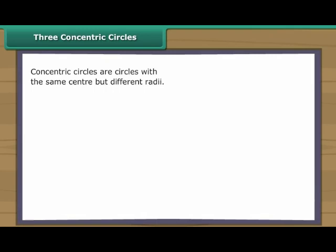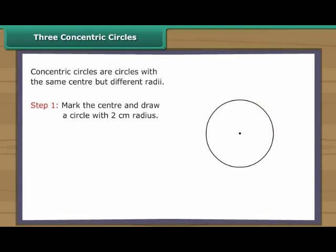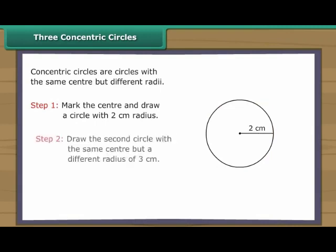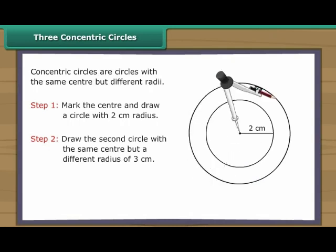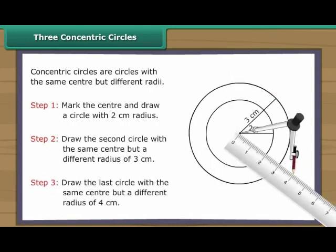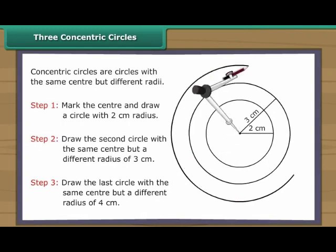Three concentric circles. Concentric circles are circles with the same centre but different radii. Let us now draw three concentric circles with the radii two, three and four centimetres. Mark the centre and draw a circle with two centimetres radius. Draw the second circle with the same centre but a radius of three centimetres. Draw the last circle with the same centre but a radius of four centimetres. We have three concentric circles.